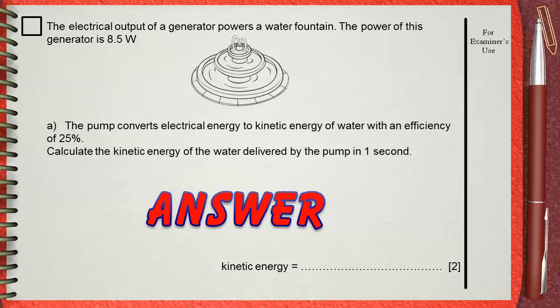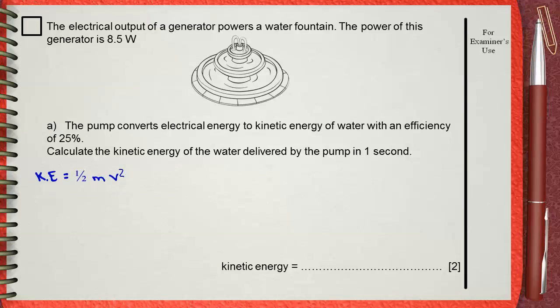First, when you see the word kinetic energy, you think about kinetic energy equals half mv squared, but this equation will not be used in this case. That's why the first thing we must do is find the givens: 8.5 watts is the power, one second is the time, and 25% is the efficiency. It's clear that you don't have mass and you don't have speed. That's why you cannot use kinetic energy equals half mv squared.